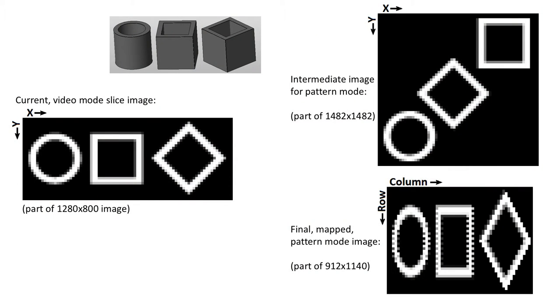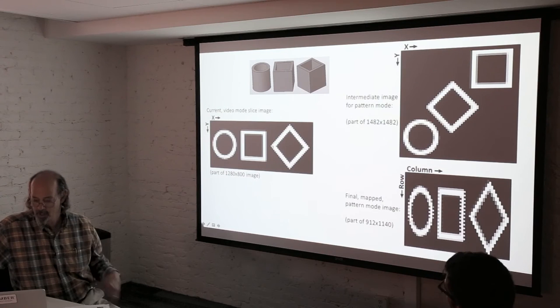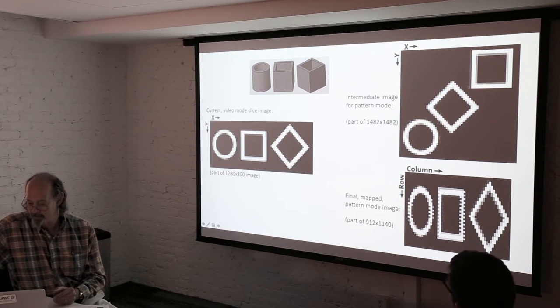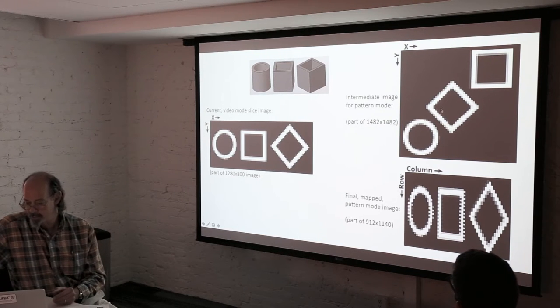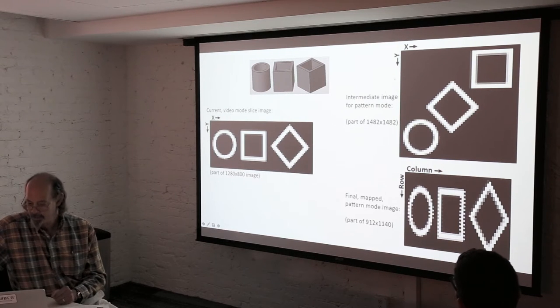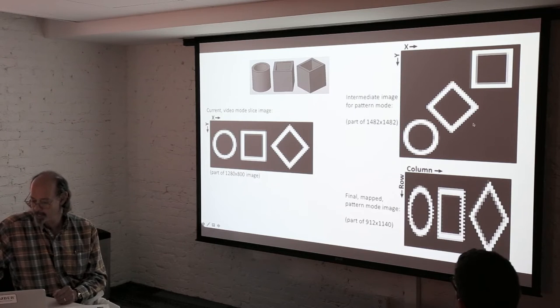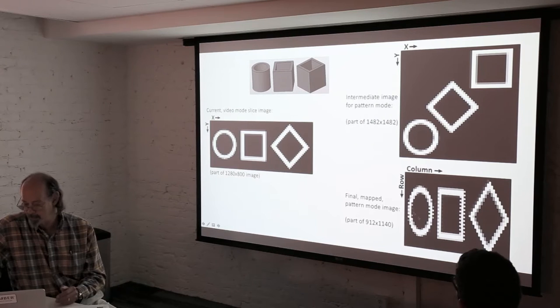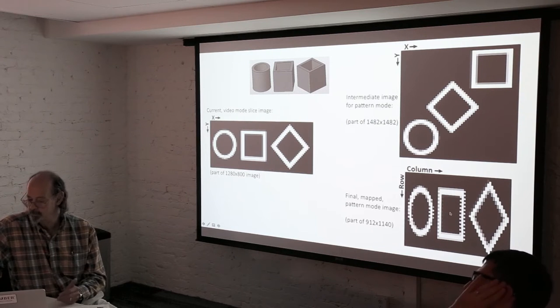So here's an example. Here's a little 3D model. These things are all pretty small. So this is a blown up image of just the center of a 1280 by 800 video mode image, the way those things would be sliced currently. What we're going to do is we're going to take their model behind the scenes, rotate it by 45 degrees before we slice it into that larger 1482 square image. These are going to be the slice data that we actually send to the projector. And then in firmware, we'll do that weird mapping to generate this final pattern mode image.